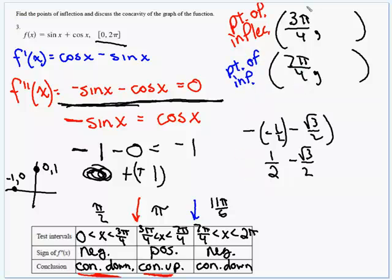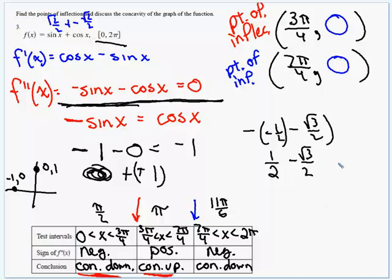To find the y-coordinates of the points of inflection, we plug those x-values into the original function f of x. For 3 pi over 4: sine of 3 pi over 4 is positive root 2 over 2, and cosine of 3 pi over 4 is negative root 2 over 2 — they add to 0. The same happens at 7 pi over 4. So both points of inflection have y-coordinate 0, giving coordinates (3pi/4, 0) and (7pi/4, 0).